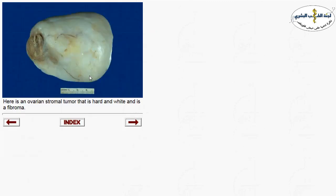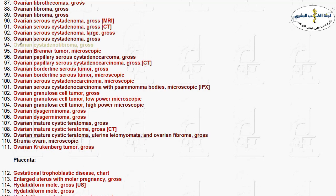Ovarian tumors are divided into three types: surface epithelial tumors, germ cell tumors, and sex cord stromal tumors. One of the stromal tumors of the ovary is fibroma, composed of fibrous tissue. On cut section, fibromas appear white with a homogenous cut surface.